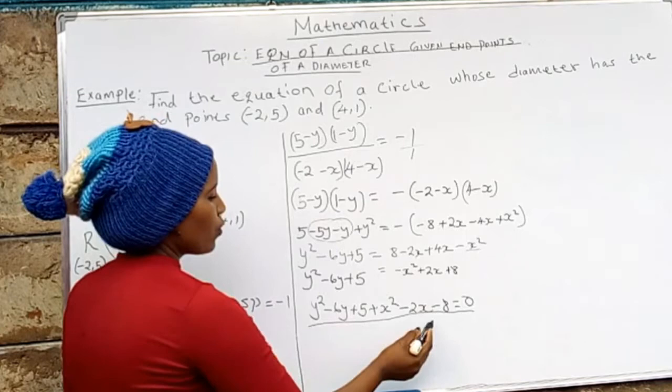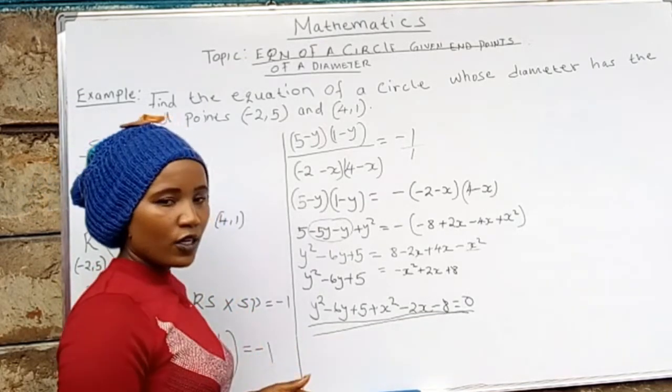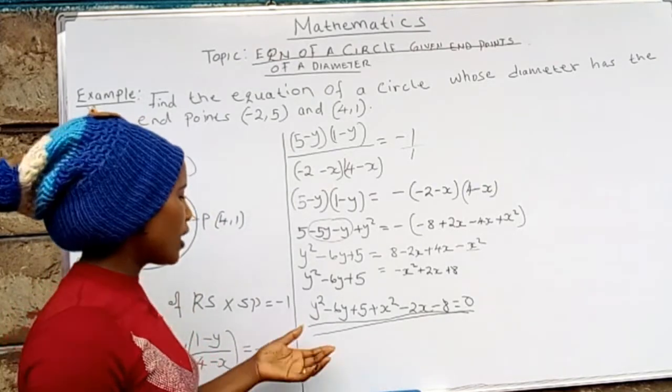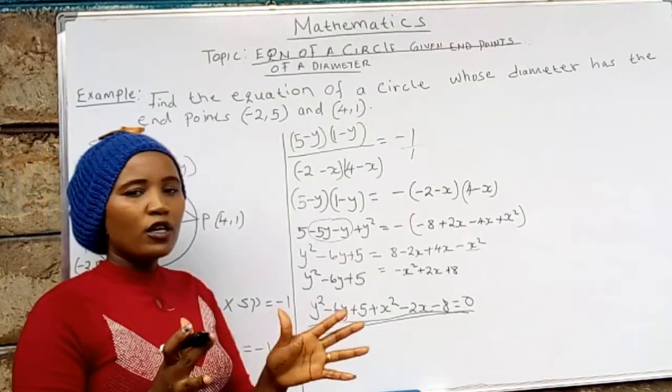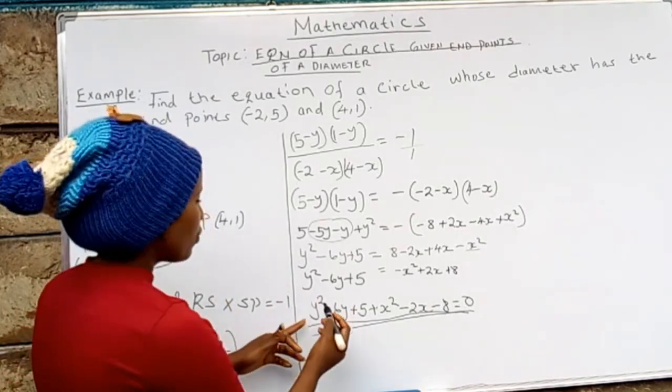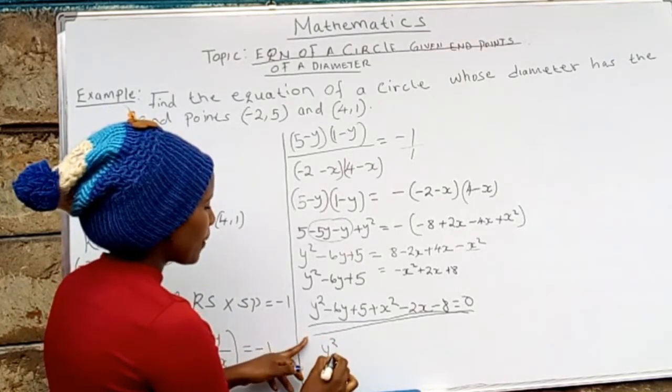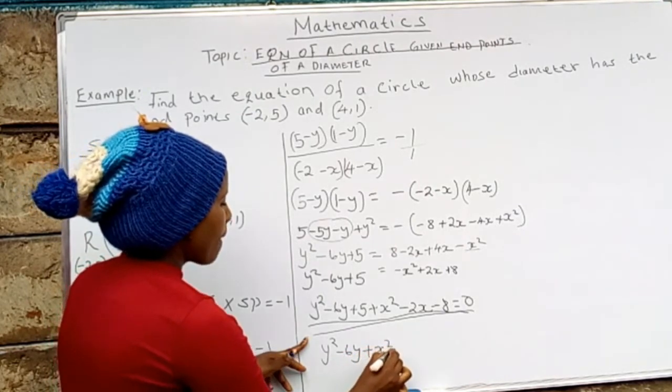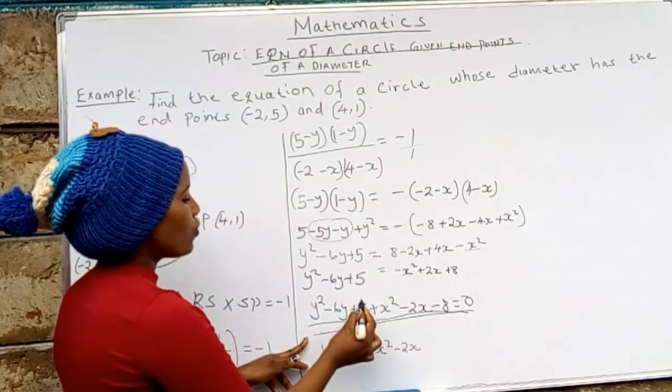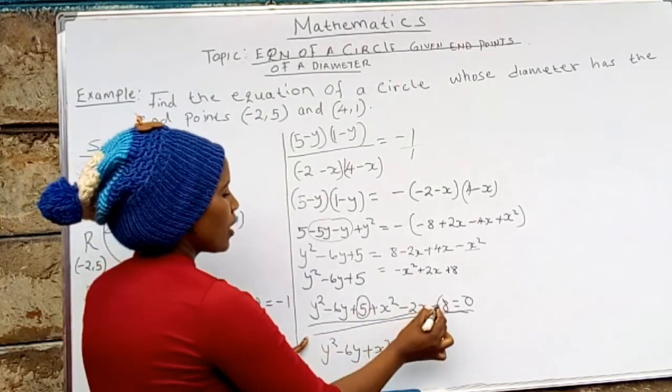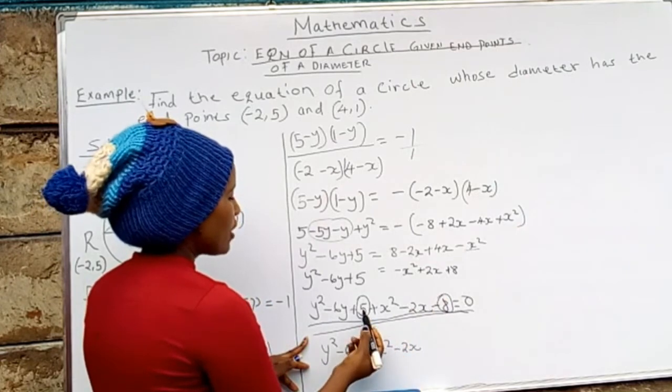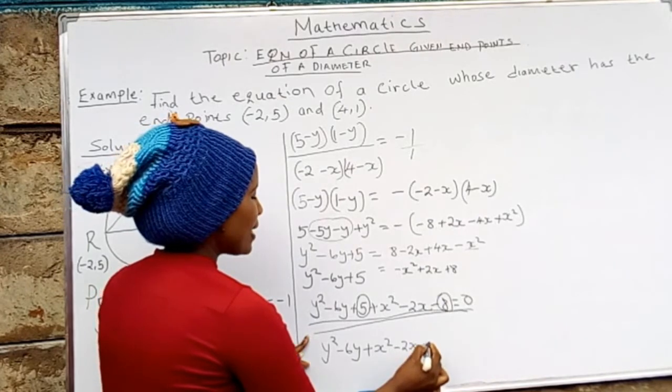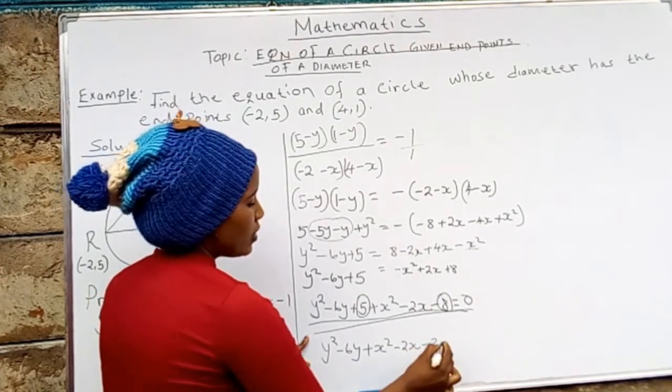And that is the equation of the circle that is required. You can proceed to simplify depending on how the question is. Maybe we can arrange them so that now it will appear to be the equation of a circle. So I put the y² first: y² - 6y + x² - 2x, and then the terms without any unknown: +5 - 8. I shall have -3. It equals 0.